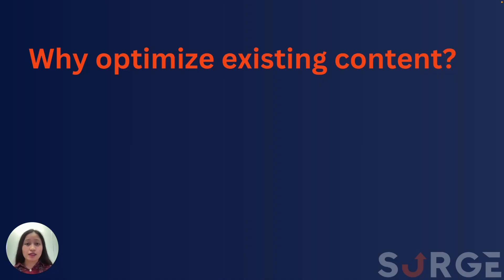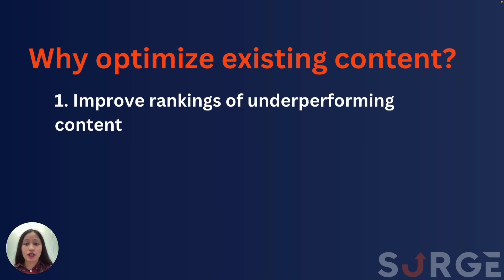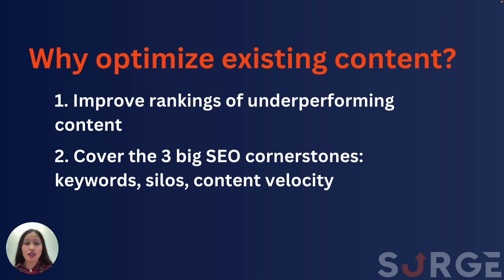Why do you need to optimize existing content? Most times you always have underperforming content that's not ranking high enough and not bringing in significant traffic to your website. So these contents are untapped opportunities where optimizing them can help you rank better in search engines and drive more traffic to your website. And by using SearchGraph's advanced SEO framework, you can easily optimize your content to cover the three big SEO cornerstones: keywords, silos, and content velocity.